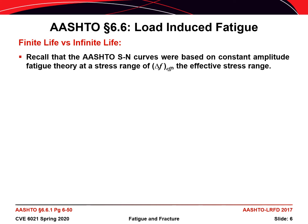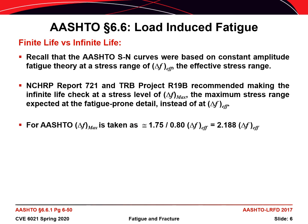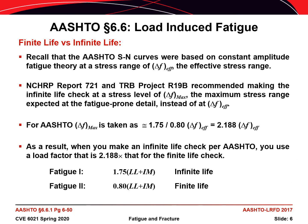The basis for the two different fatigue load combinations comes from NCHRP Report 721, published in 2012. Prior to that, there was just a single fatigue load combination. Since the SN curves that form the basis of the AASHTO fatigue provisions represent a 50% chance of survival for any given detail, Report 721 recommends making an infinite life check at the maximum stress range expected as opposed to the effective stress range. For AASHTO purposes, the maximum stress range is taken as approximately twice the effective stress range — specifically, it's taken as a ratio of the load factors for the Fatigue 1 and Fatigue 2 load combinations.